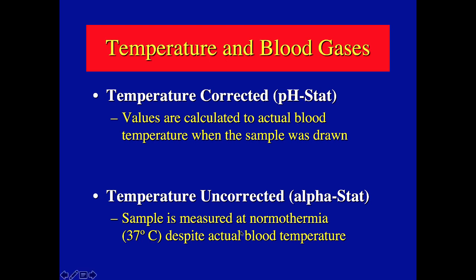With alpha stat, the sample is put into the blood gas machine and it gives results based on a blood temperature of 37 degrees — even if the patient is actually at 25 or 18 degrees. Maintaining normal blood gases in uncorrected versus corrected form can yield very different values.